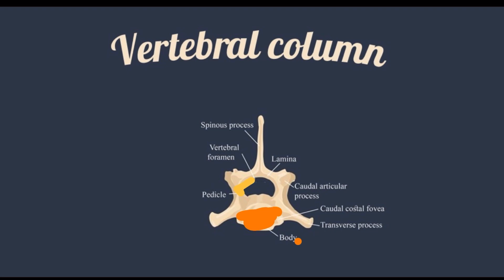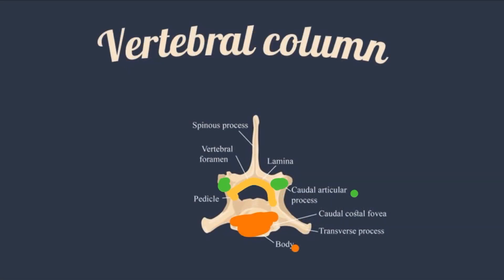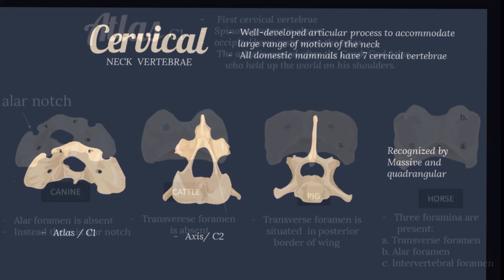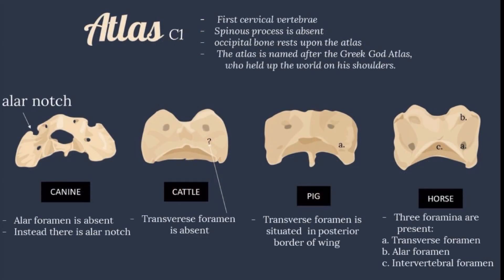The arc completes the vertebral foramen dorsally. The cranial and caudal articular processes form the joints between adjacent vertebrae; in the thoracic region they also form joints with the ribs. The spinous process projects dorsally from the arc of the vertebra. The transverse process projects laterally from the arc. The cervical vertebrae have well-developed articular processes to accommodate the large range of motion of the neck. All domestic mammals have seven cervical vertebrae. They can be recognized by the fact that they are massive and quadrangular. The atlas is the first cervical vertebra. The spinous process is absent, and the occipital bone rests upon the atlas. The atlas is named after the Greek god Atlas, who held up the world on his shoulder.